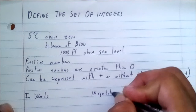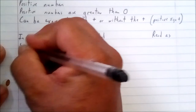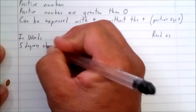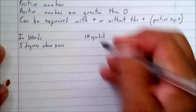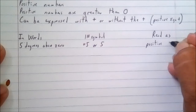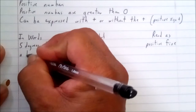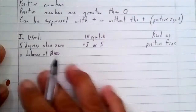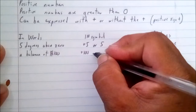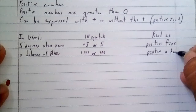In words, in symbols, and how they are read. We say 'five degrees above zero' — in symbol we write plus five, or simply five, and in words we read it as positive five. A balance of a hundred dollars can be written as plus 100 or simply 100 — that is understood to have the plus sign — and we say positive a hundred.